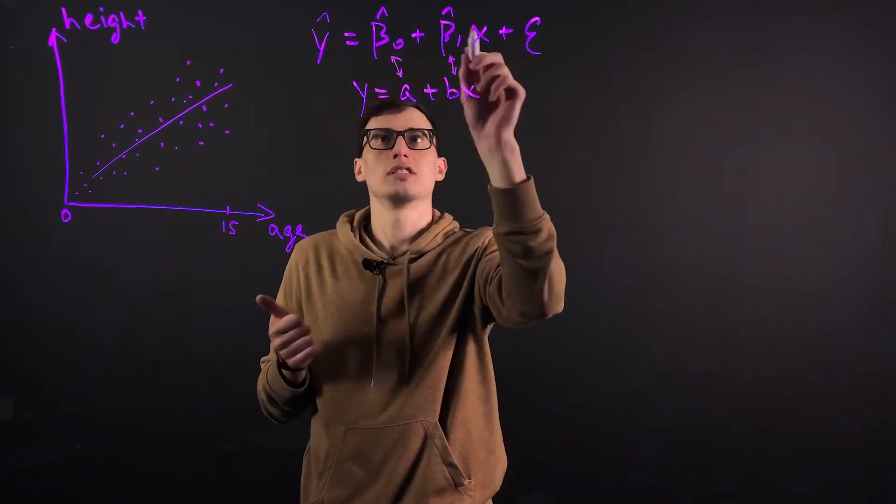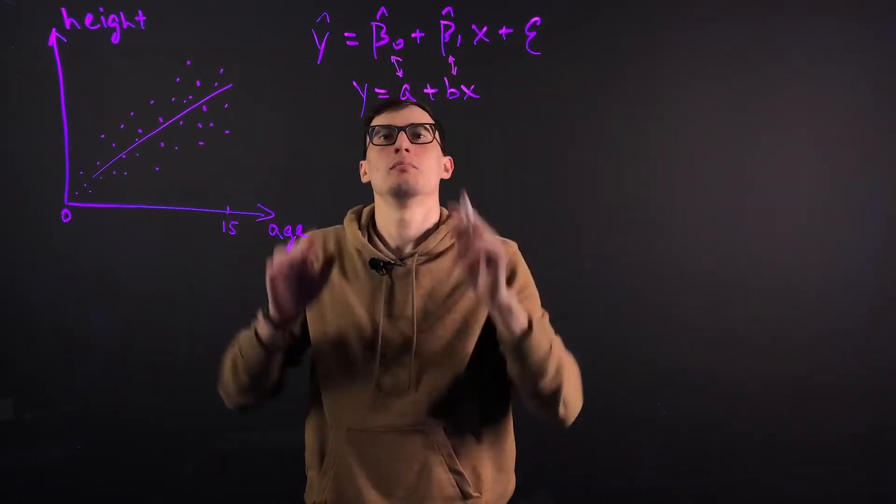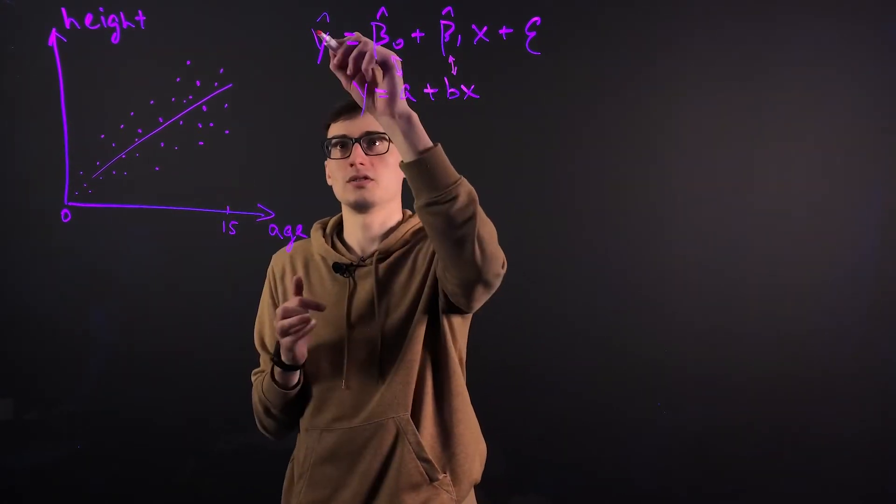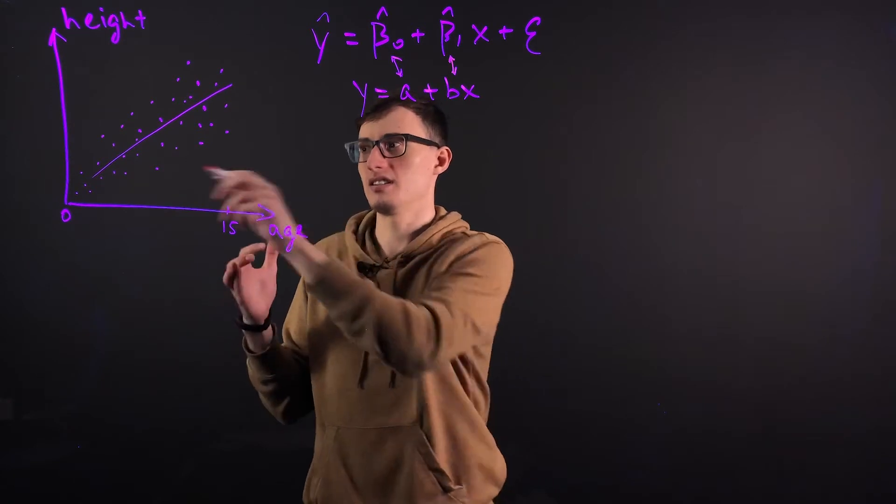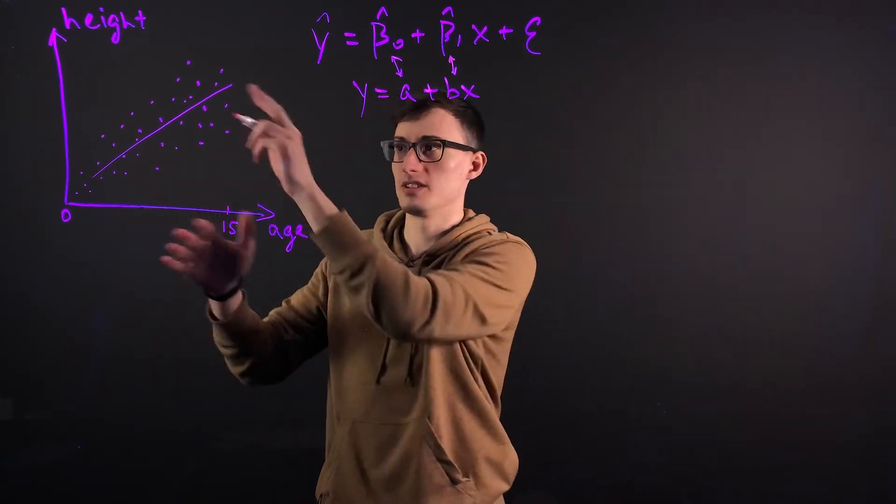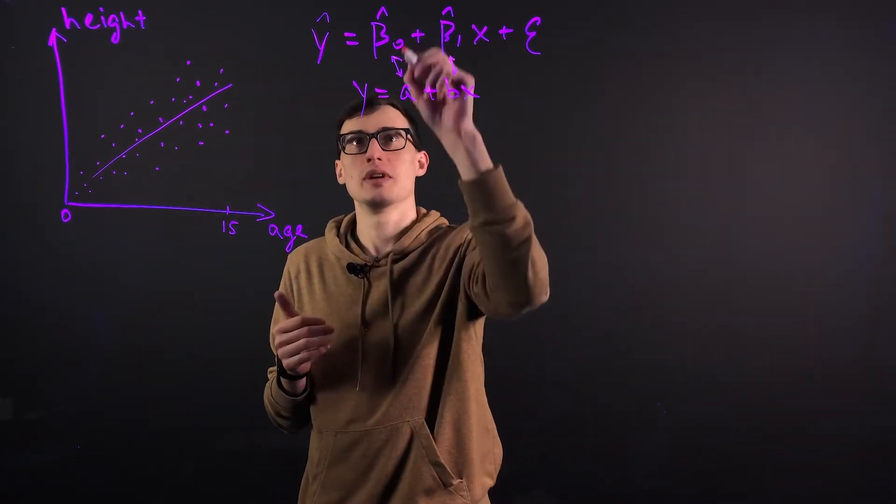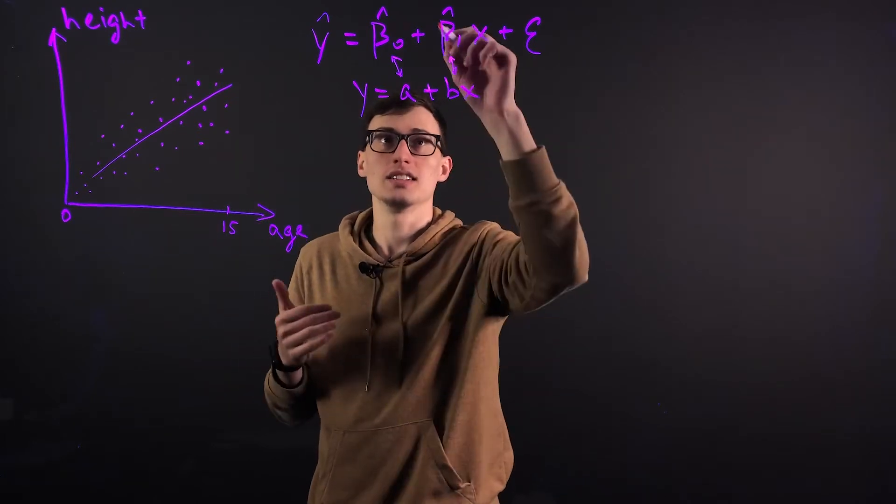What do the little hats mean? The little hats mean that it's an estimator. So this y, this line that we draw here, it's estimated. It's not the true line, obviously, of all the points. Same with the beta zero. We estimate it. And same with the beta one.